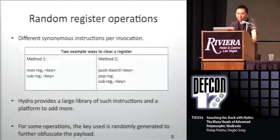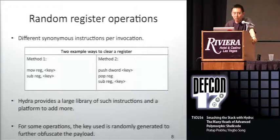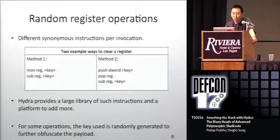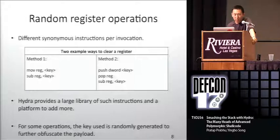For register clearing operations, we have many different ways of selecting and clearing registers. Most methods involve generating random keys, moving the keys around, then move, subtract, and so on — as long as the register is cleared at the end. It does various things before that. Hydra provides a large library of such instructions and a platform to easily add more.